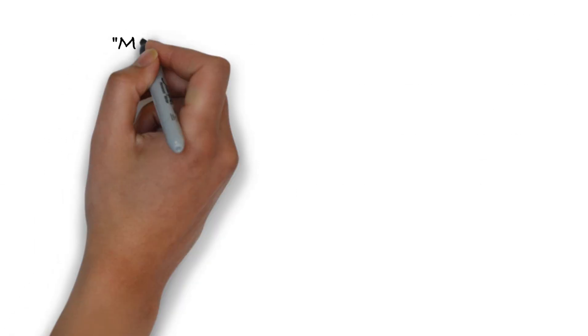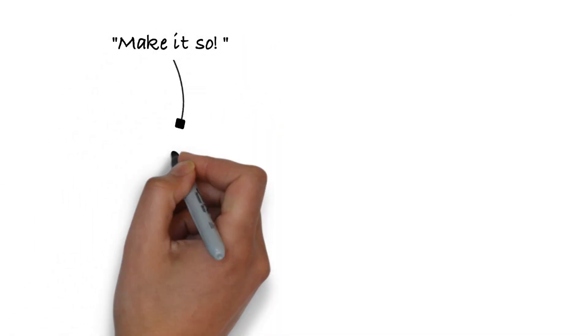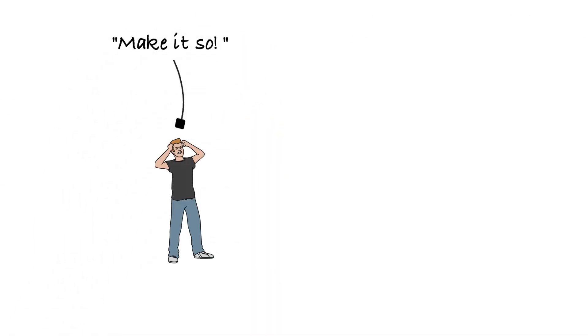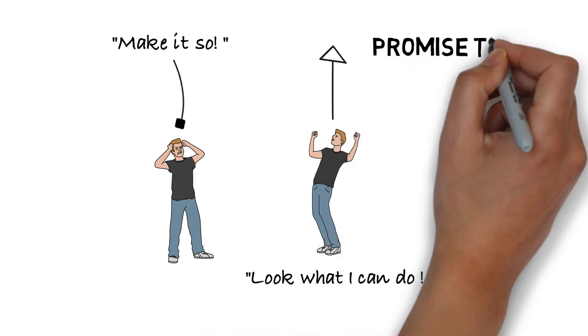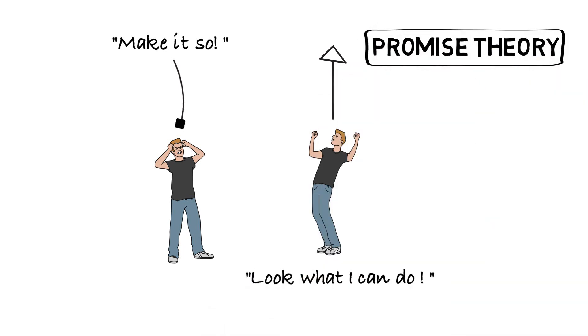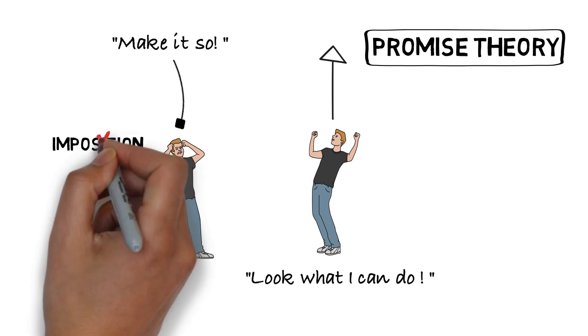Recall the basic assumption that agents can only promise their own behaviours, because they always have incomplete information about what other agents may do. That makes imposition ineffective and promises of key importance.